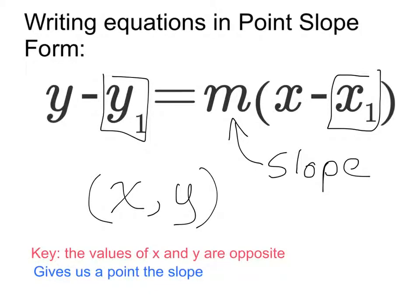The other key to keep in mind is that the values of x and y are going to be opposite of what they look like in the equation. That's because of the minus signs in this form. We'll talk about that more in a second.